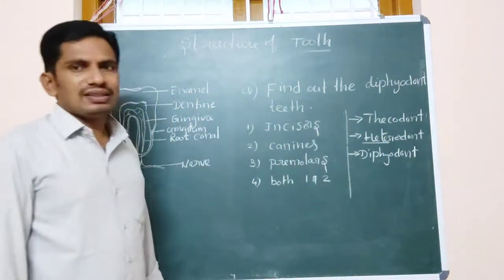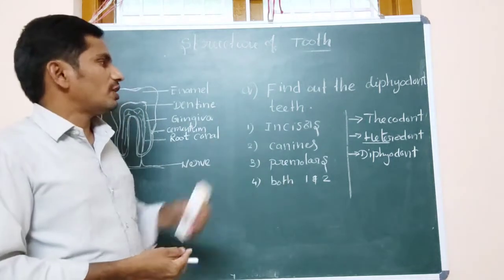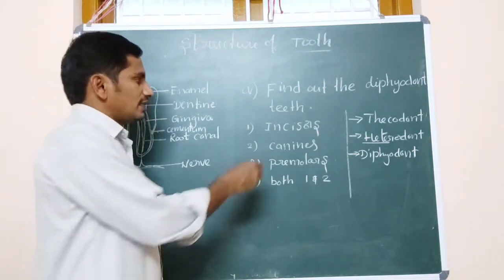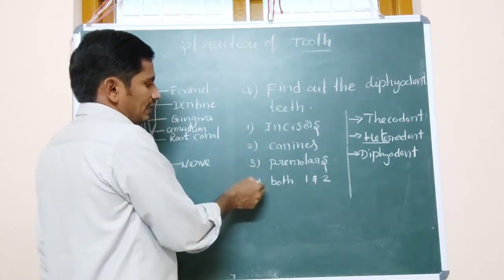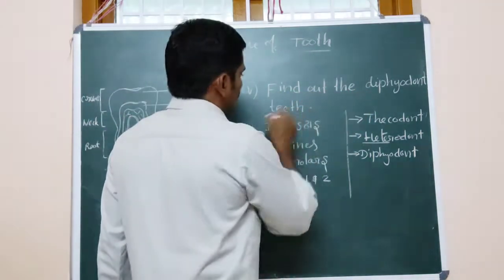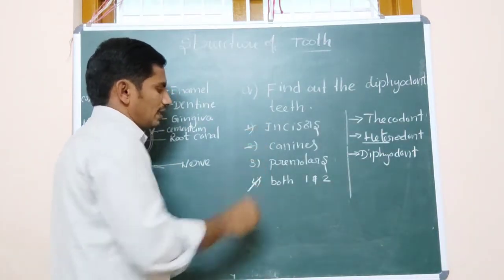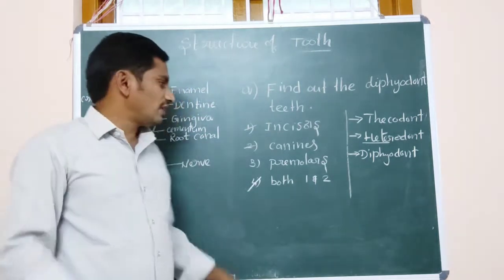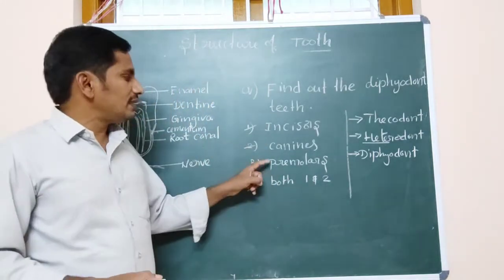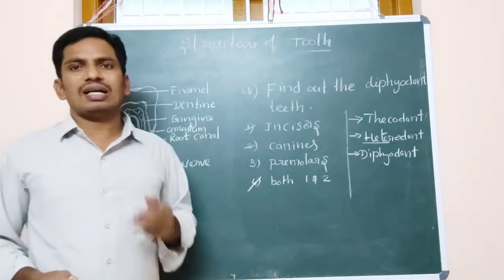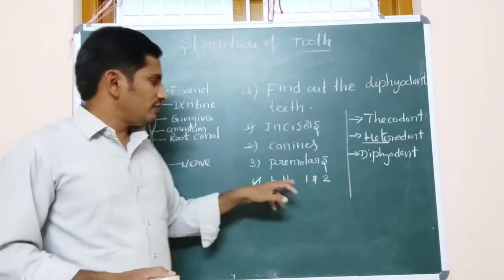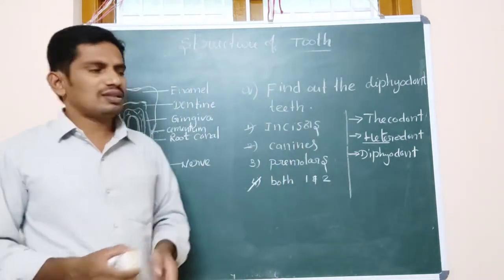Now the objective is related to diphyodont. You should know about the types of teeth. The answer is both 1 and 2 — incisors and canines are diphyodont teeth. The rest — premolars and the third set of molars — are absent in childhood. That's the reason premolars and the third set of molars do not undergo diphyodont replacement; they form only one time and remain until the end.